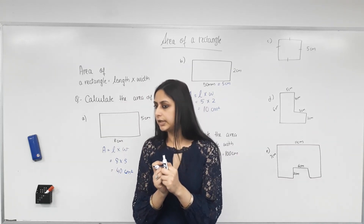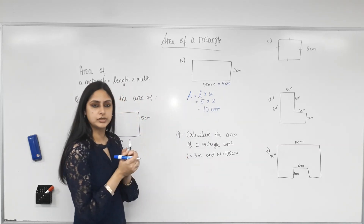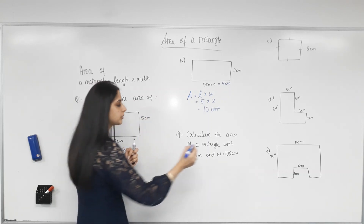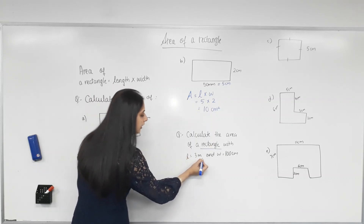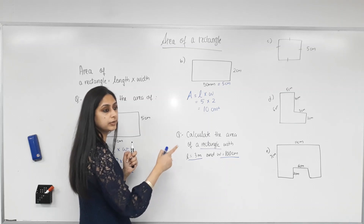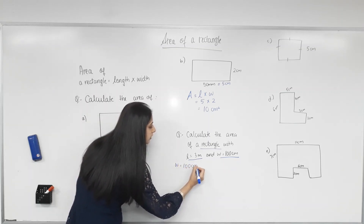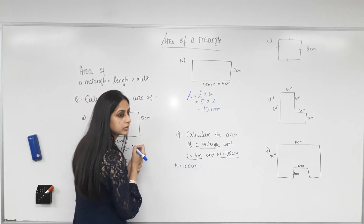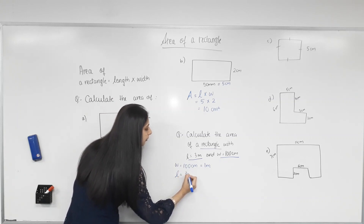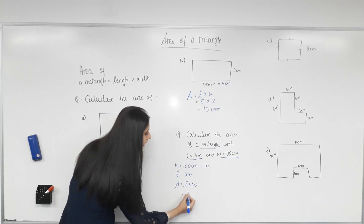Now calculate the area of a rectangle with length 3 meters and width 100 centimeters. No diagram is given, but we know it's a rectangle. Length is in meters, width is in centimeters, so first convert the width: 100 centimeters equals 1 meter. Now both measurements are in the same units, write the formula, and multiply them together: 3 times 1 equals 3 square meters.